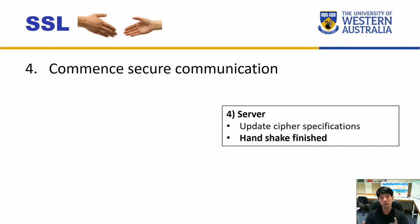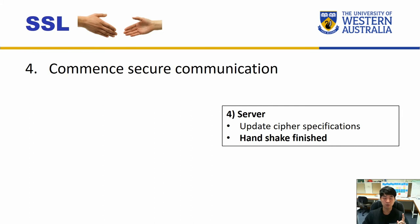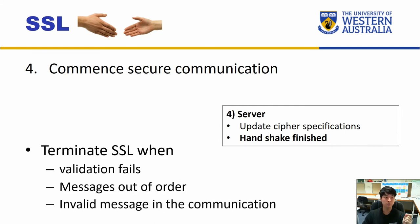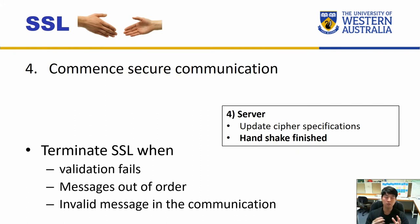The server and client can also optionally agree to validate that the shared secret key is working as an additional step. If everything goes well and both client and server are happy with the steps, then communication begins. However, there are times when communication can be terminated: when validation fails — for instance, the client could not confirm the authenticity of the certificate provided by the server, meaning the server may be masquerading as the legitimate server. Also if messages arrive out of order or if an invalid message occurs in the communication, SSL will be shut down.